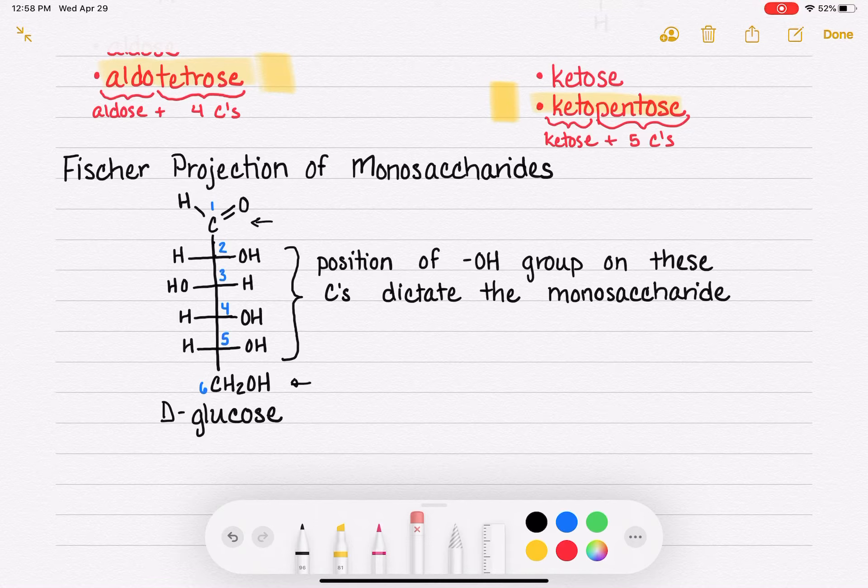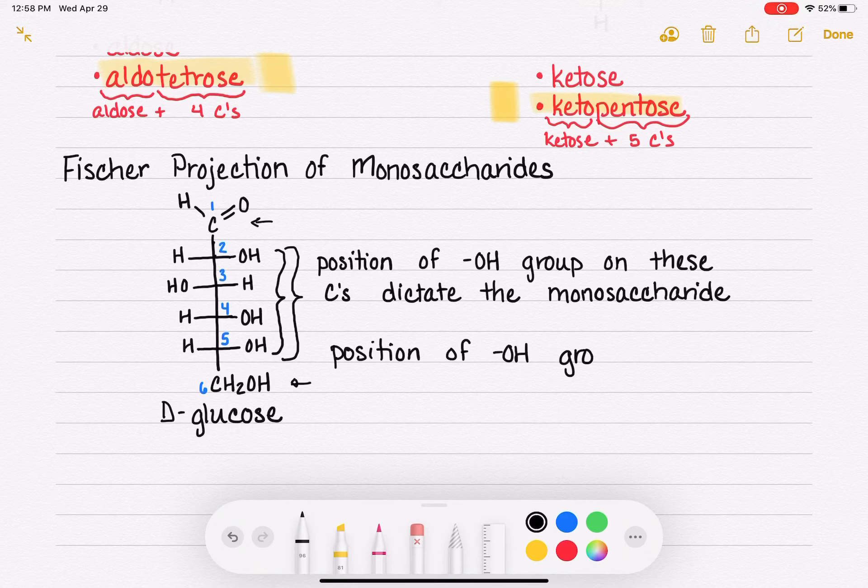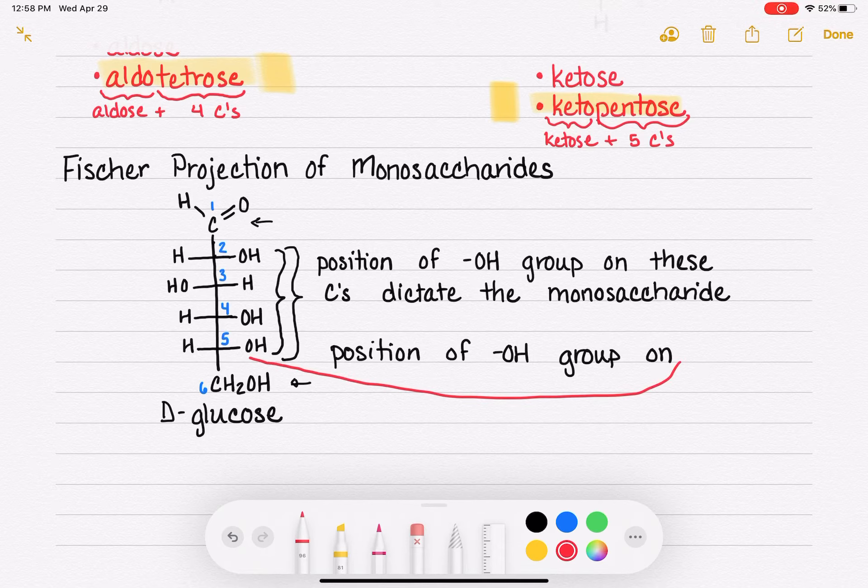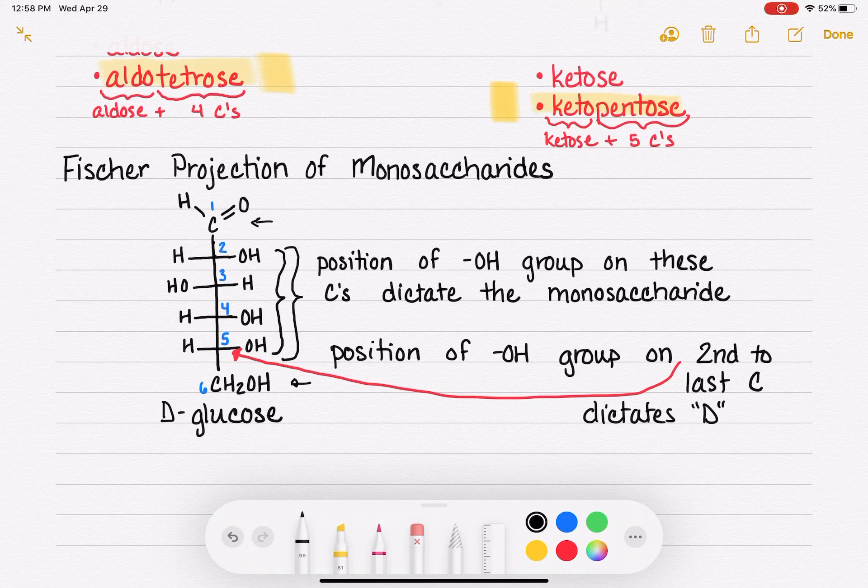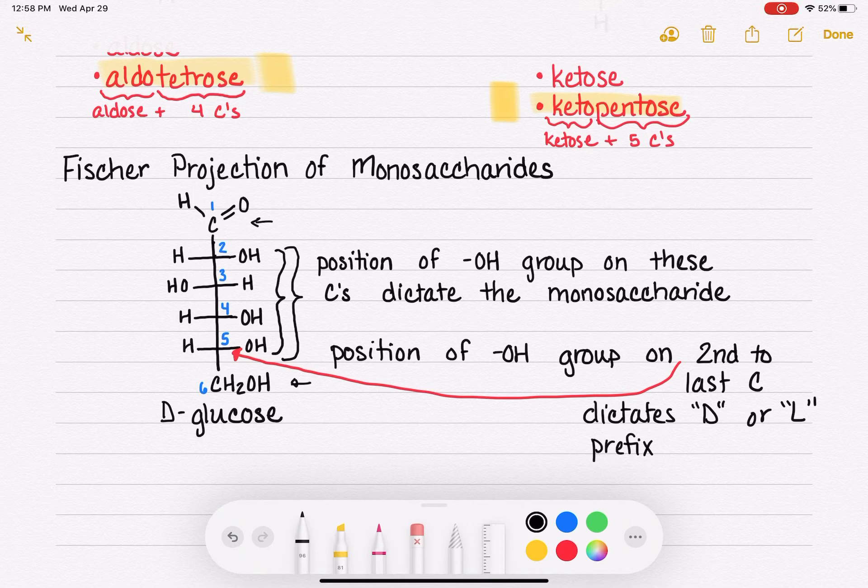So the position of the OH groups dictates the molecule's name. The letter D in front of the molecule is indicating specifically the position of the OH group on the very last one of these four important carbons. So the position of the OH group on not always carbon number five, but the second to the last carbon dictates the D, or the other option is L, prefix. So that carbon, in this case, carbon number five, the second to last carbon, is really important because it gets to contribute to the molecule's name two times.